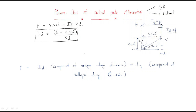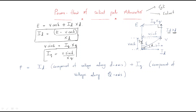For iq, observe that iq·xq and V sin δ are both the same length. So we write V sin δ = iq·xq, and from this the quadrature axis current equals iq = V sin δ / xq. This is the quadrature axis current formula.